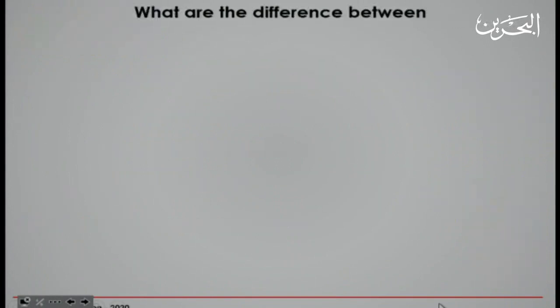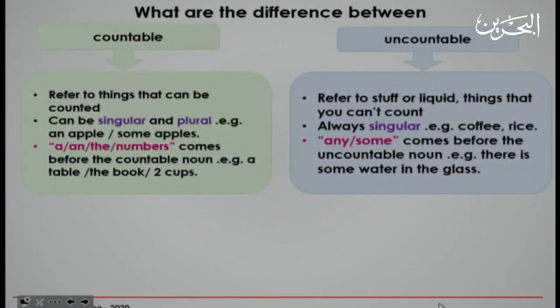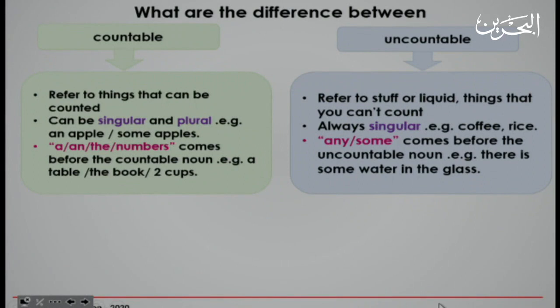What are the differences between countable and uncountable? Countable nouns refer to things that can be counted. They can be singular and plural. For example: an apple, some apples. The articles 'a' and 'the,' as well as numbers, come before the countable noun — for example: a table, the book, two cups.